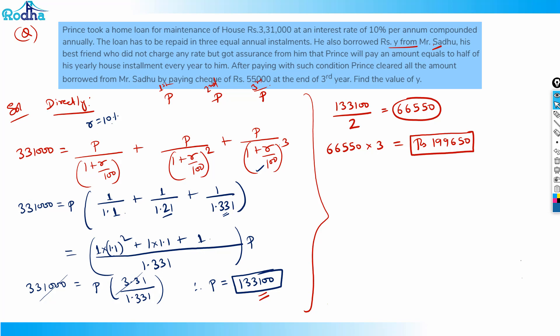At the end he also pays rupees 55,000 extra to Mr. Sadhu to clear all the borrowed amount. So the total amount Y = 1,99,650 + 55,000 = ₹2,54,650. That's the answer. A very conceptual question that clears up a lot of confusion about compound interest installment problems.